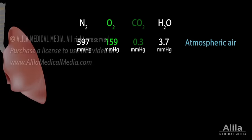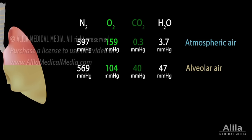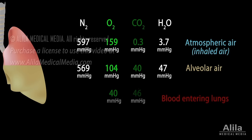Atmospheric air is brought into the lungs through inhalation, but the lungs are not completely emptied and replaced with outside air with each cycle of breathing. In fact, only a relatively small portion of air in the alveoli is refreshed with each breath. This makes the air composition in the alveoli significantly different from that of inhaled air. The gas exchange in the lungs occurs between this alveolar air and the blood in capillaries.